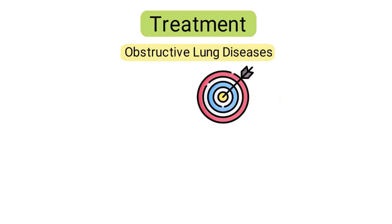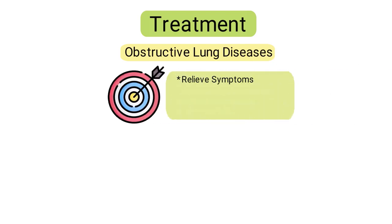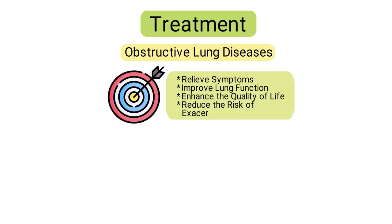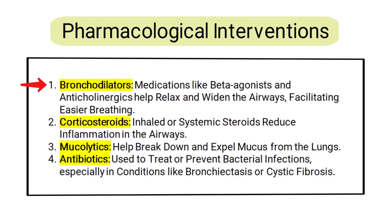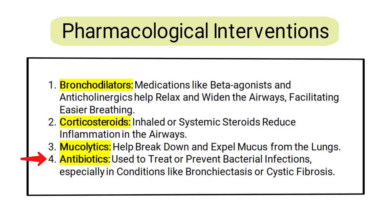Treatment for obstructive lung diseases aims to relieve symptoms, improve lung function, enhance quality of life, and reduce the risk of exacerbations. First, it involves pharmacological interventions, such as bronchodilators — medications like beta agonists and anticholinergics that help relax and widen the airways, facilitating easier breathing. These also include corticosteroids, which are inhaled or systemic steroids that reduce inflammation in the airways; mucolytics, which help break down and expel mucus; and antibiotics, used to treat or prevent bacterial infections, especially in conditions like bronchiectasis or cystic fibrosis.